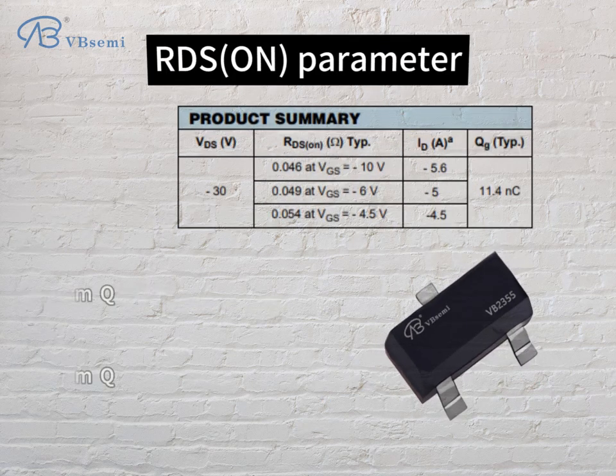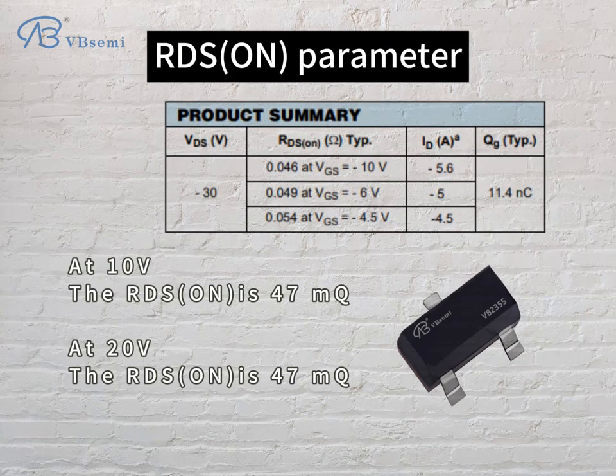RDS(on) parameters: at VGS = 10V, the RDS(on) is 47mΩ; at VGS = 20V, the RDS(on) is also 47mΩ.